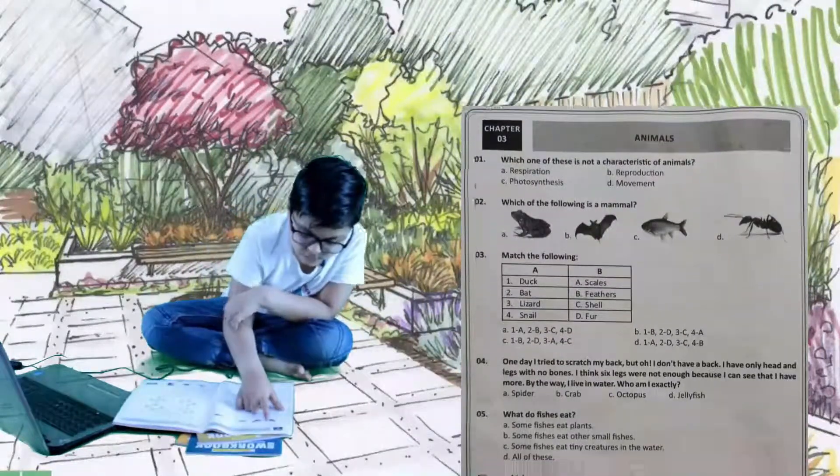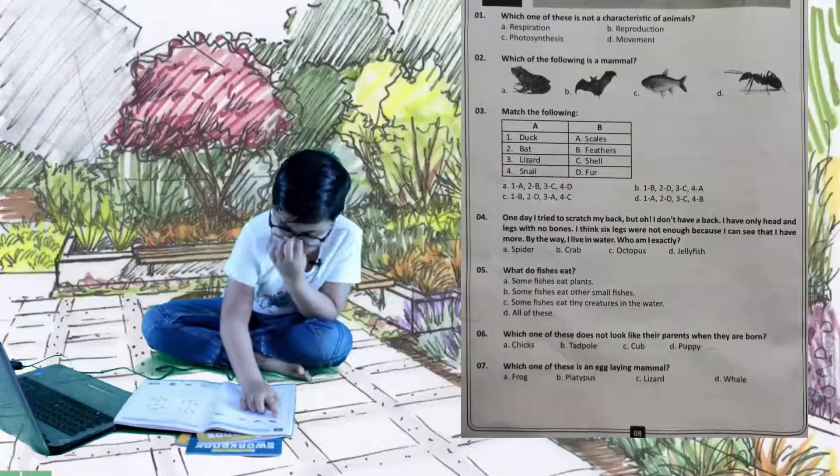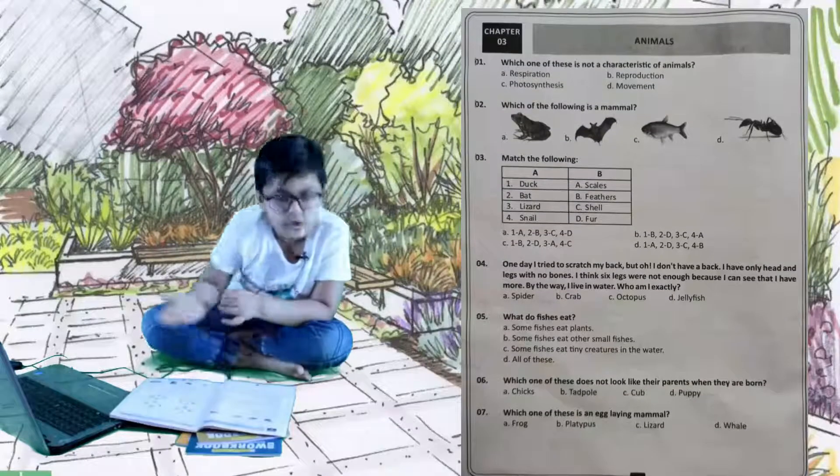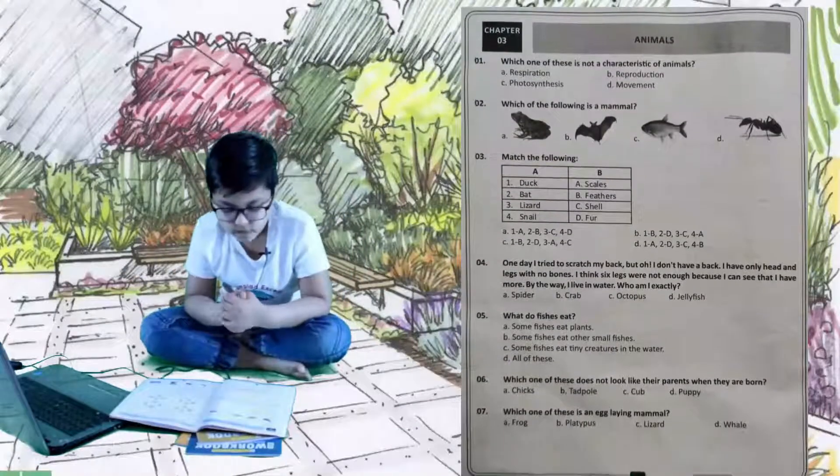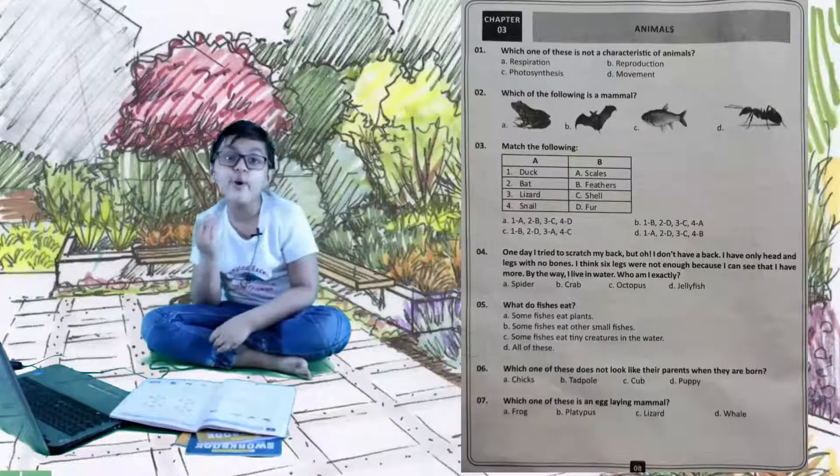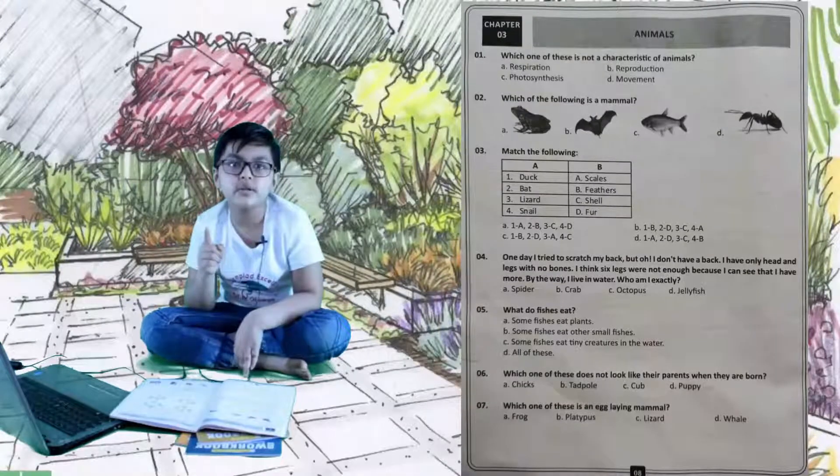Which of the following is a mammal? Options: A is frog, B is bat, C is fish, and D is ants. The right answer is B, bat. You may think it's a bird, but it's a mammal and it is the only mammal that could fly, and it gives birth to its young ones.